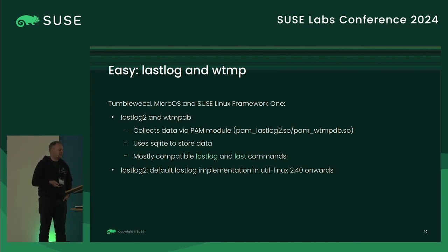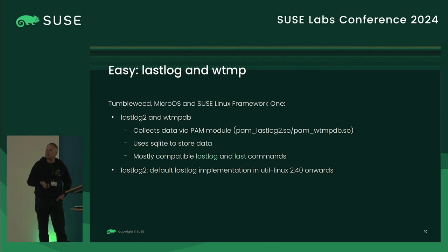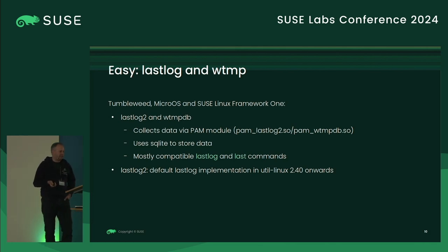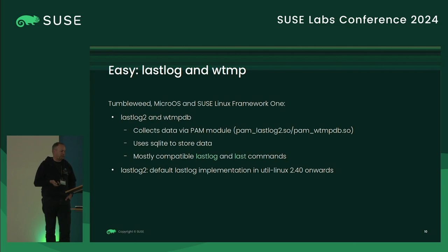We wanted to improve it, and the Red Hat developers liked it so much that they convinced us and the util-linux maintainer to replace the lastlog implementation in util-linux with lastlog2. With the latest release of util-linux 2.40, that is now the case, thanks to Fubi who did all the adjustments to make that possible.